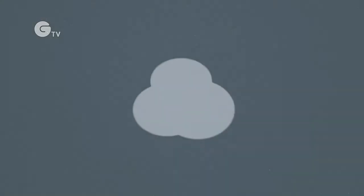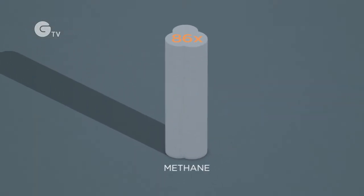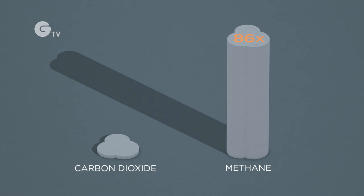Methane is a super pollutant. It's 86 times more disruptive to our climate than the carbon dioxide from coal burning power plants.